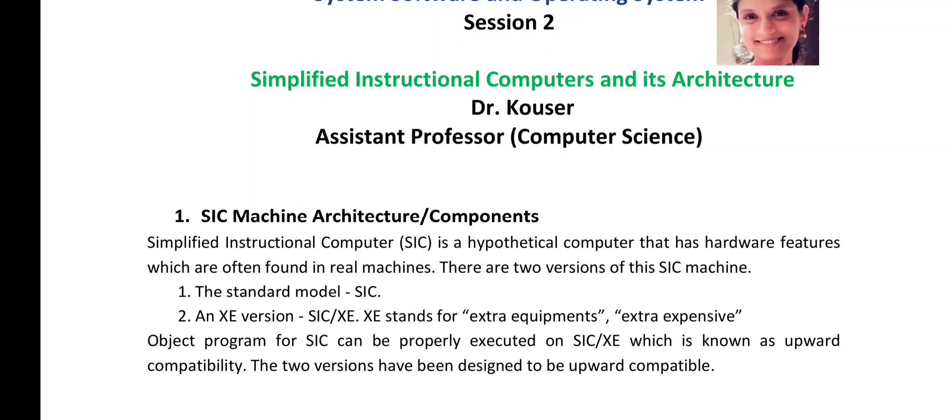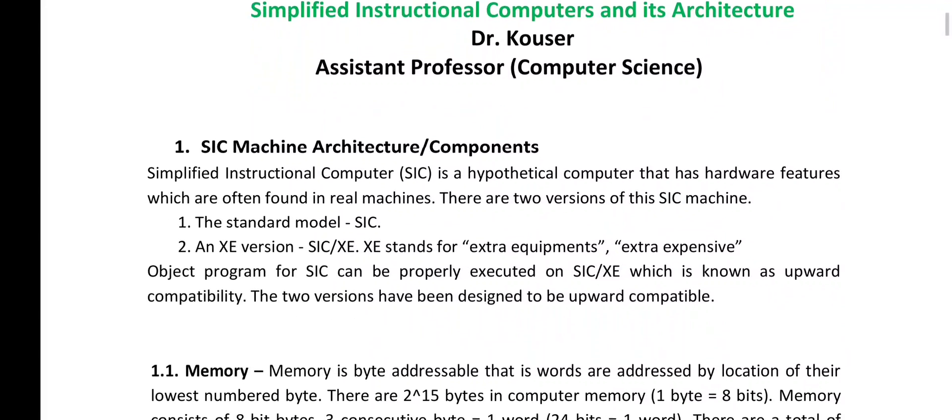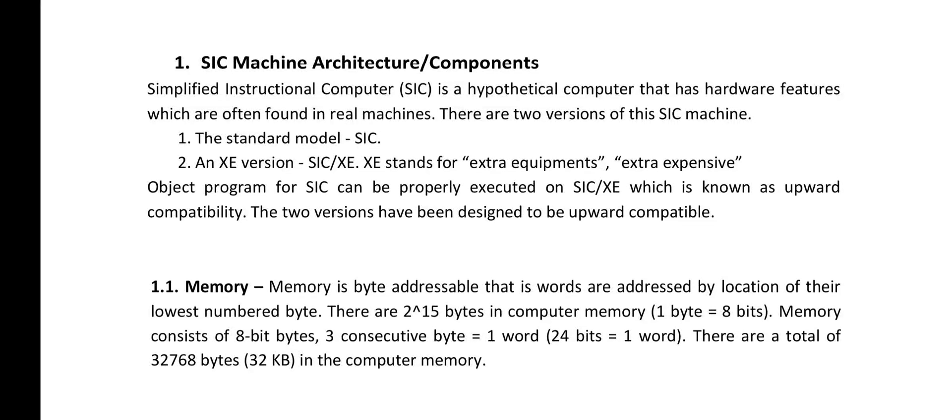When we understand the different components or architecture of the SIC Machine, the major component is Memory. The memory component in an SIC Machine is byte addressable, meaning words are addressed by the location of their lowest numbered byte. There are 2 to the power of 15 bytes in computer memory. One byte is 8 bits, and memory consists of 8-bit bytes. Also, 3 consecutive bytes constitute 1 word, which is 24 bits. There are a total of 32,768 bytes, which is 32 kilobytes, in the computer memory of SIC Machine Architecture.